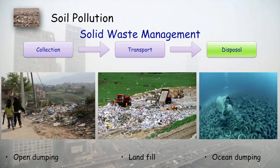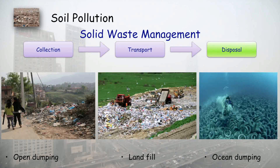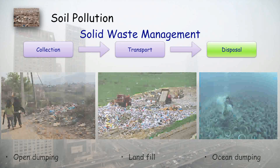The second method is landfill — areas given by the government where all the garbage from the city is dumped. The third is ocean dumping, where we pack the solid waste and dump it into the ocean, which is also not good because it affects aquatic life.